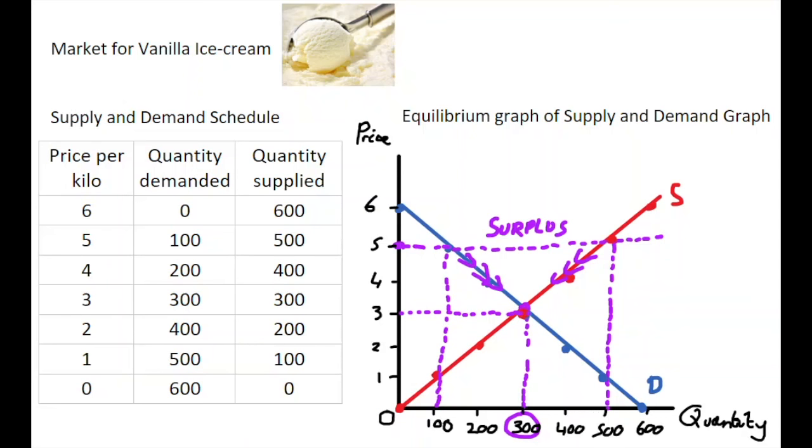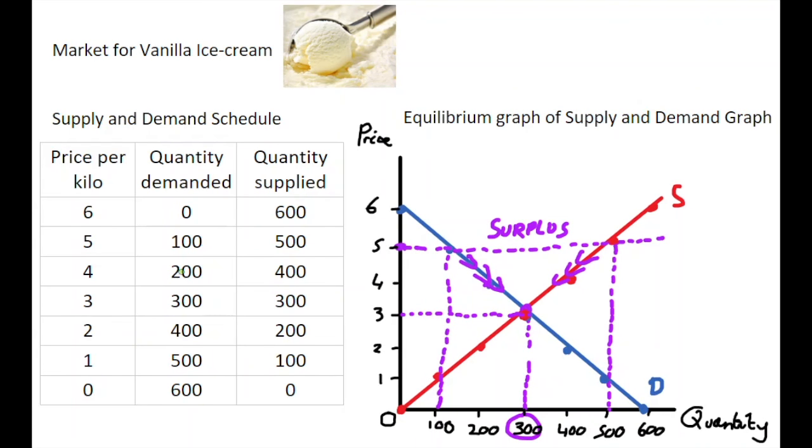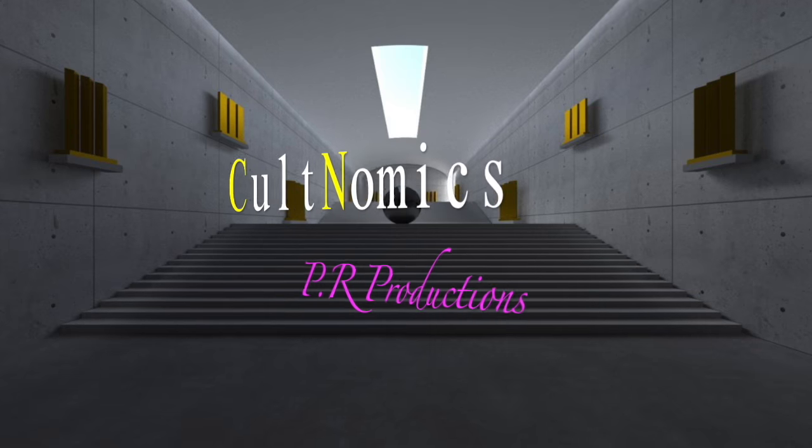equilibrium point. And we can see this equilibrium point over in our demand and supply schedule over here. At a price of three euro, the quantity demanded is 300, as is the quantity supplied. So the equivalent point on our diagram is the equilibrium where everything is equal to one another on our demand and supply schedule. I hope you